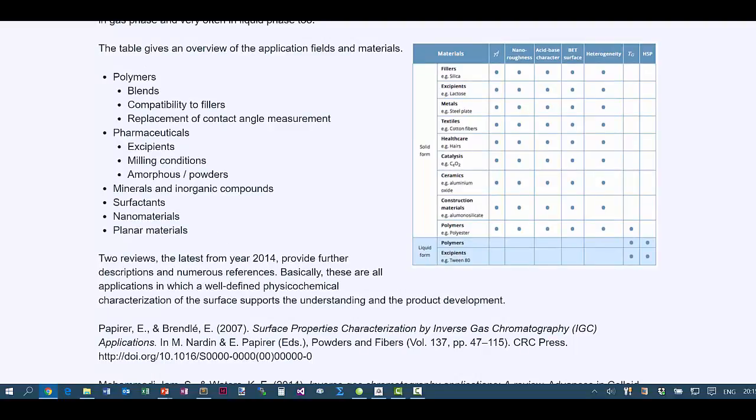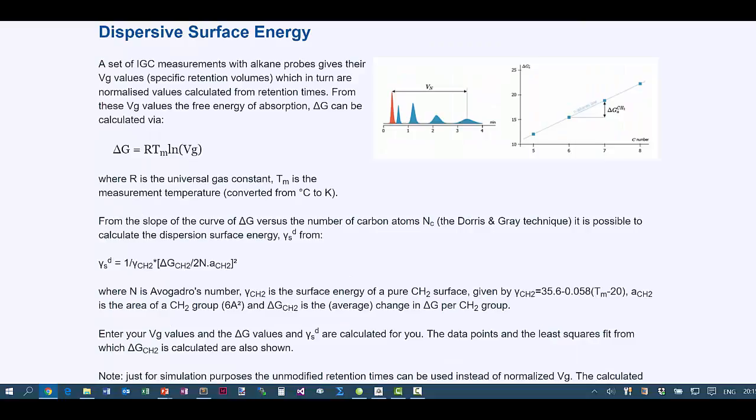Now let's get to something more specific. The first thing we can measure with IGC is the dispersive surface energy of the material. You want to know if it's low surface energy or high surface energy, or at least the dispersive component of it. So what you do is you inject pentane, hexane, heptane and octane. In this diagram it looks as though they've all been injected at the same time like conventional GC. But in fact they are separate injections. But they all come out at different times.